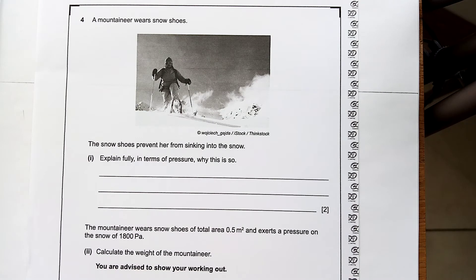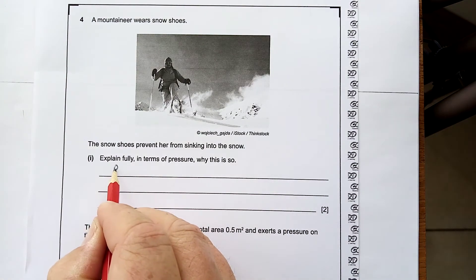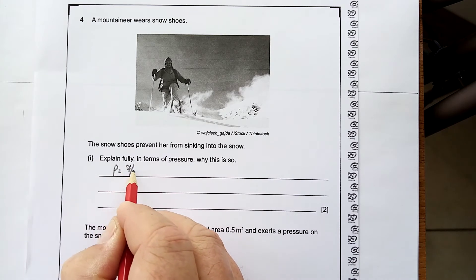A mountaineer wears snowshoes. The snowshoes prevent her from sinking into the snow. Explain fully in terms of pressure, why this is so. Well, we need to make sure that we put down the formula. Because, if you don't put down the formula, you probably don't get a mark.